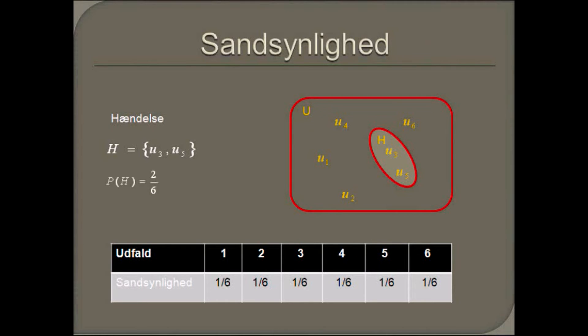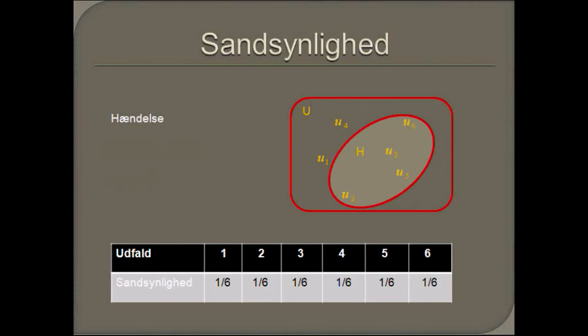Sandsynligheden for at hændelsen indtræffer er naturligvis lige en tredjedel. En anden hændse kan være mængden af disse udfald. Sandsynligheden for hændsen er nu to tredjedel.